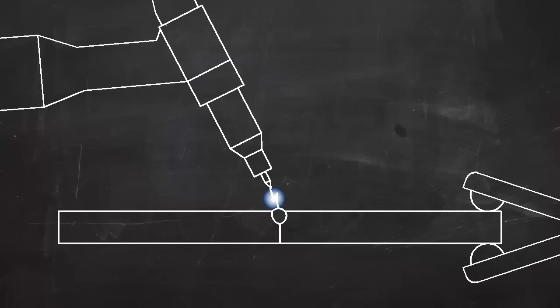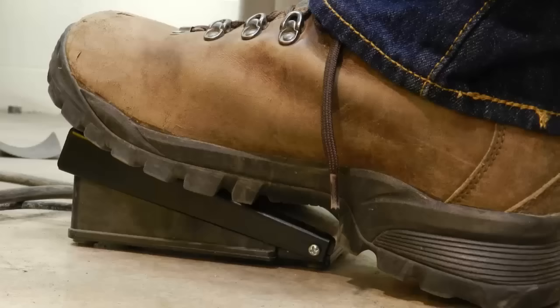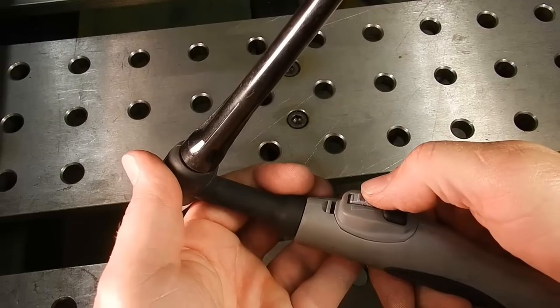TIG works by melting the base metal, that is, the metal that makes up the two pieces that are to be joined. The heat is generated by an electric arc that forms between the base metal and the tungsten electrode. You can control the amount of heat with a foot pedal or with a thumb wheel on the torch.